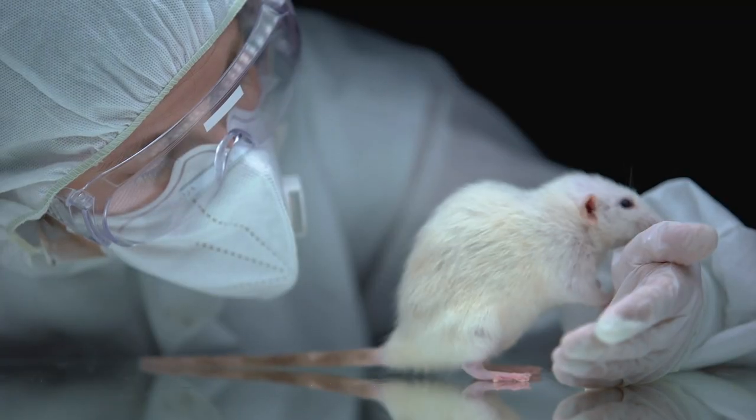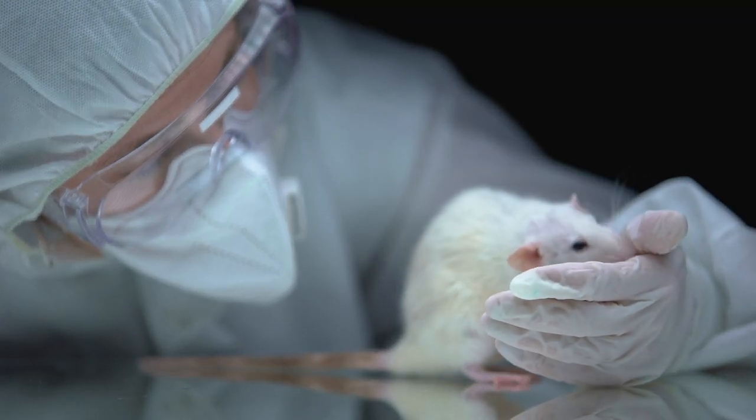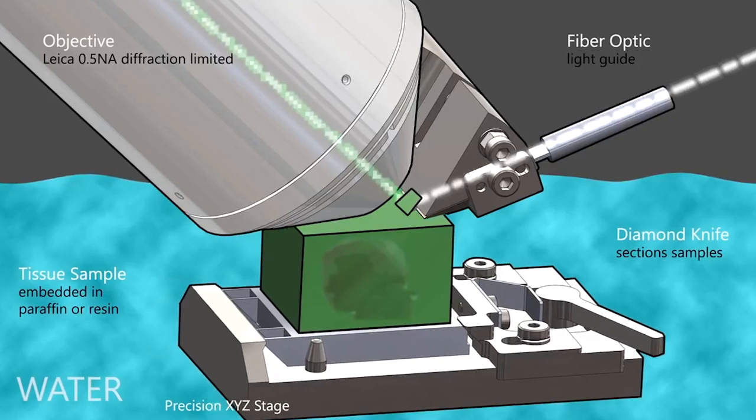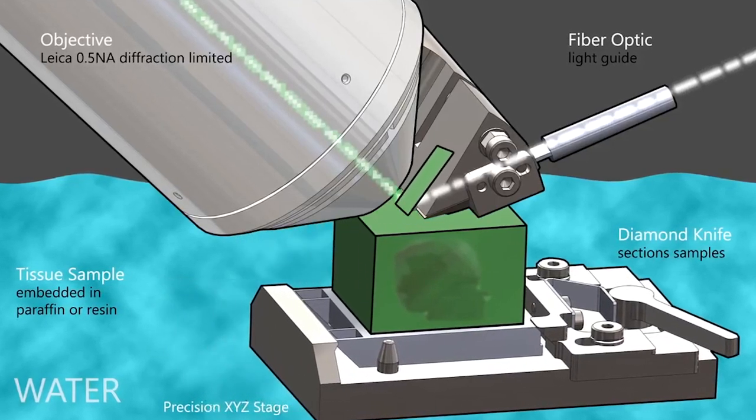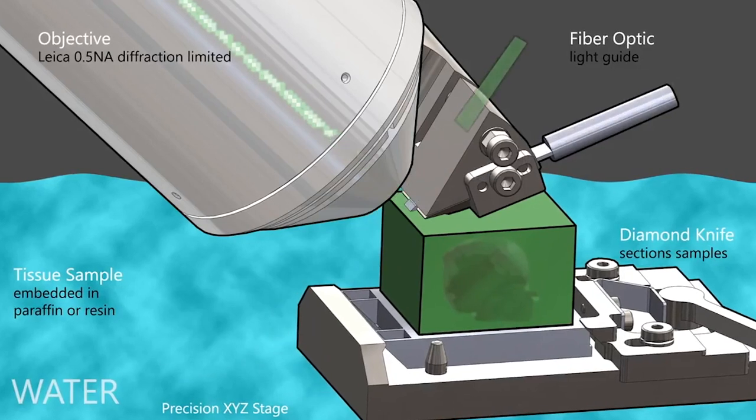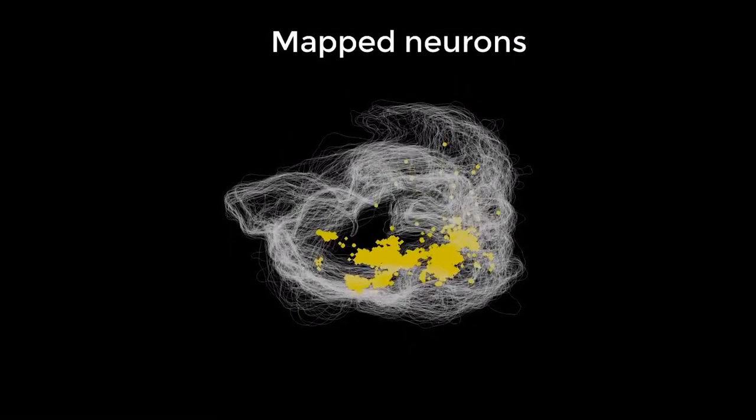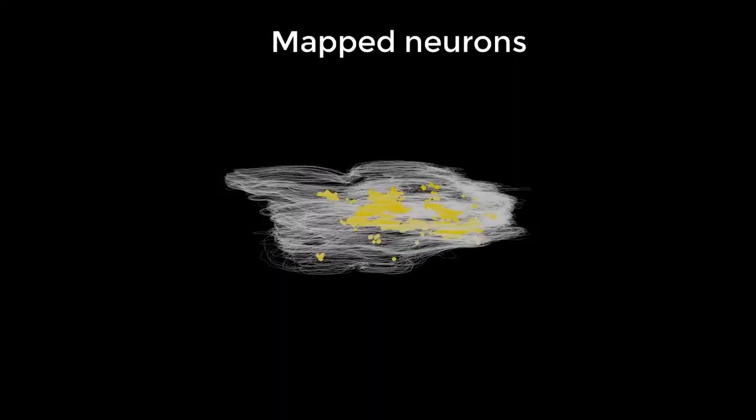The 3D model was based on a rat heart. To build it, researchers used a knife-edge scanning microscope that cut off a microscopic layer of the heart and took a picture of it. About 750,000 images were stacked together to reveal the 3D structure of the heart at the cellular level.